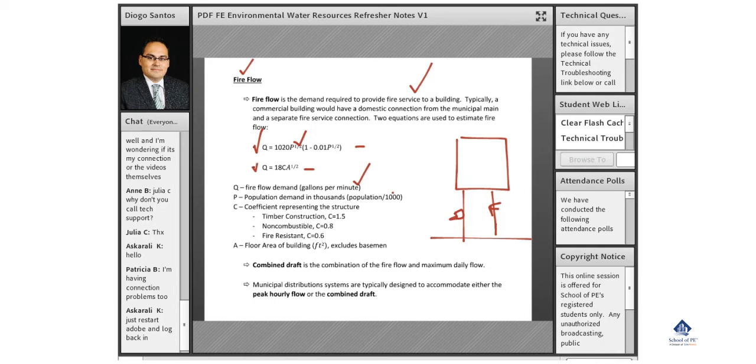The second equation is for building design. Fire flow demand equals the coefficient C representing what type of structure—whether timber, non-combustible, or fire resistant. Numbers are higher for wood construction, then non-combustible like concrete and steel, then fire resistant with extra protection. The flows go down the more protected your building is.